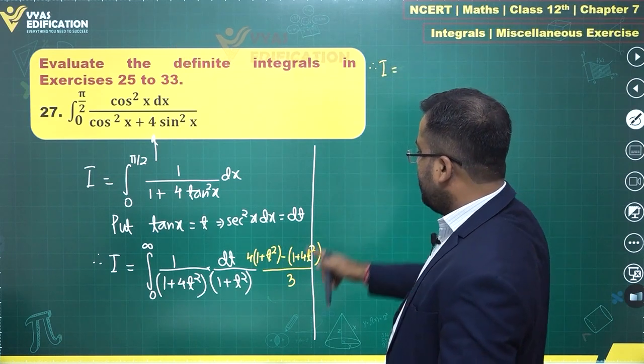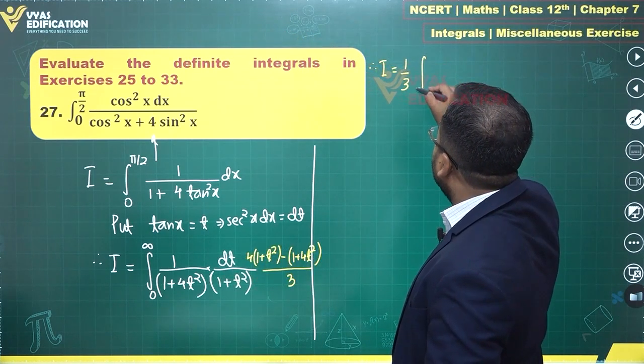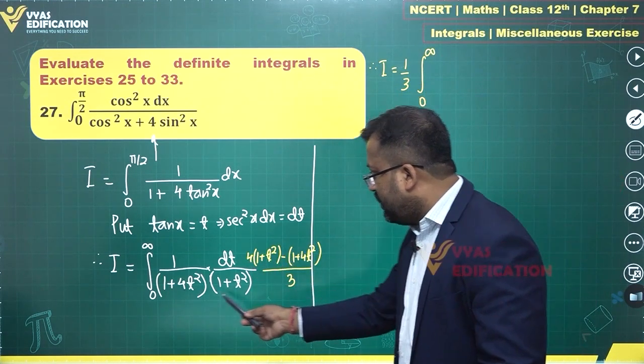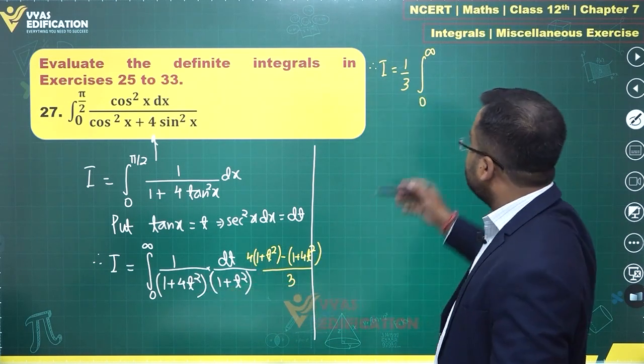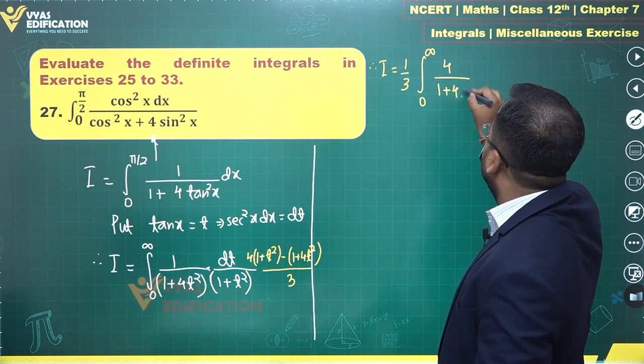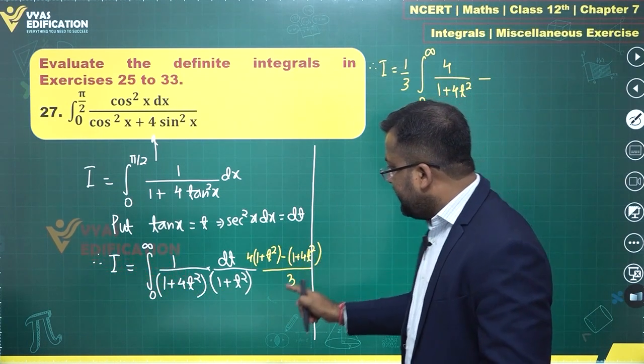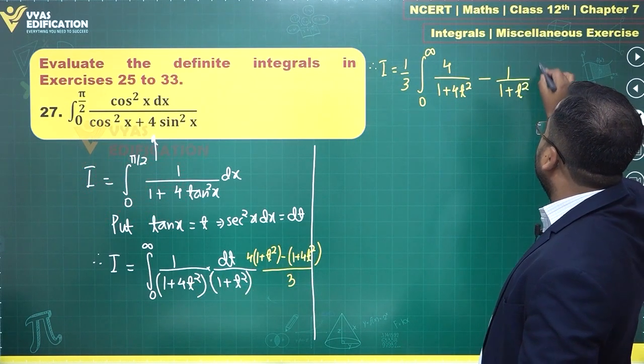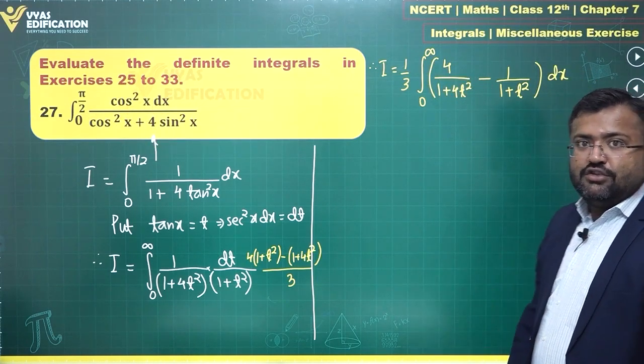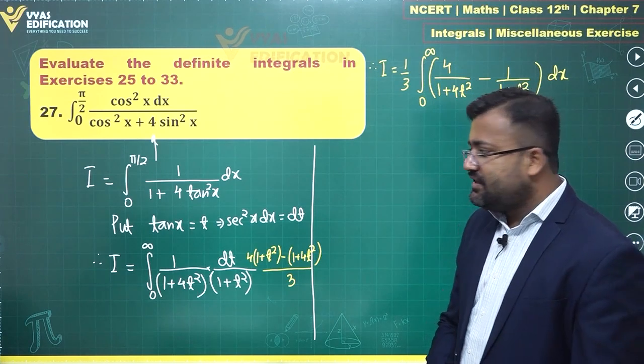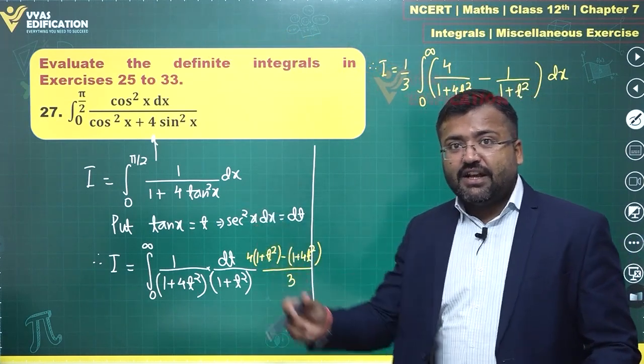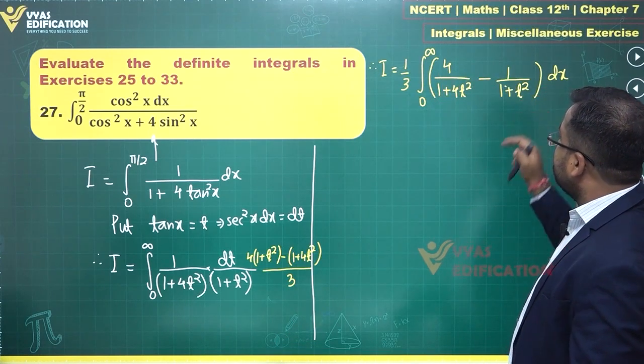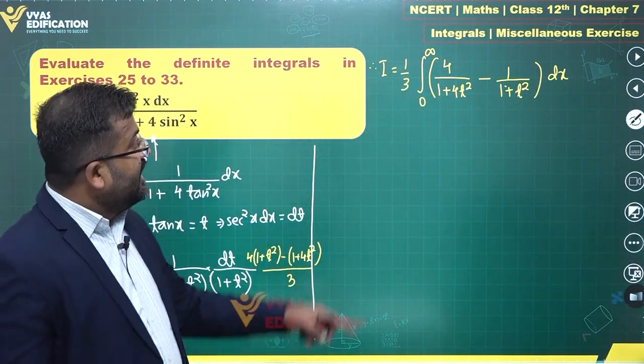Therefore I will be equal to this 3 goes outside, 1/3, integral from 0 to infinity. What do I get? 4 times (1+t²) divided by this whole expression. 1+t² goes, 4/(1+4t²). Minus this divided by this whole, 1+4t² gets cancelled. You will get 1/(1+t²). Observe this carefully. So this is another shortcut of partial fractions. Without actually finding the partial fractions, we have found them. 4/3 is the coefficient of this, 1/3 with a minus is the coefficient of this 1/(1+t²) over there.